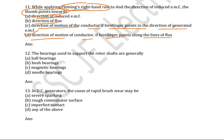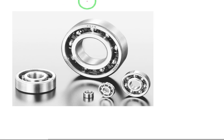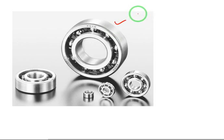Next question: the bearings used to support the rotor shaft are generally which type? Ball bearings, bush bearings, or magnetic bearings? The correct answer is ball bearings. By using ball bearings we can reduce the friction between stationary parts and rotational parts. That is why we use ball bearings — these are used in DC generators.